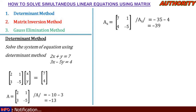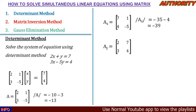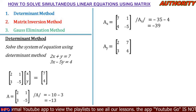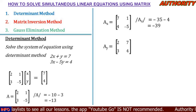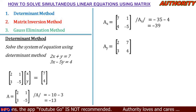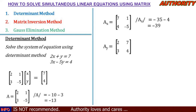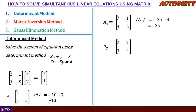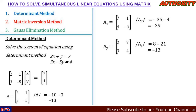Now we form matrix Ay. This time we replace the second column, which is [1; -5], with the constant [7; 4]. So matrix Ay = [2, 7; 3, 4]. The determinant of Ay equals 2 times 4 minus 3 times 7, which gives 8 - 21 = -13.